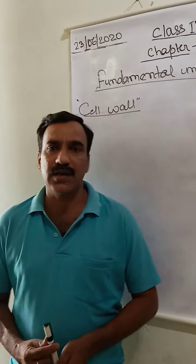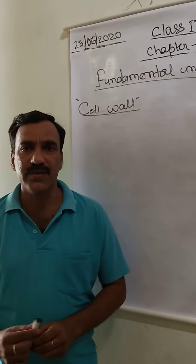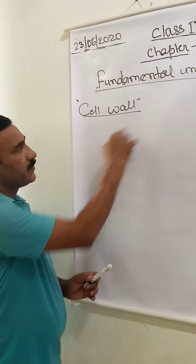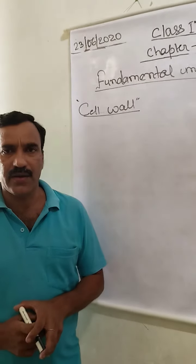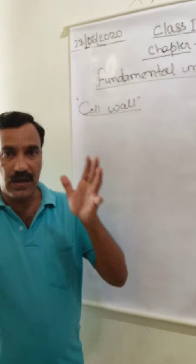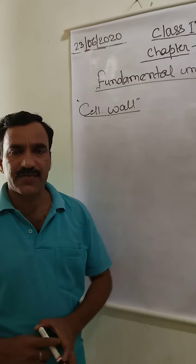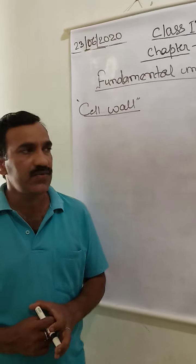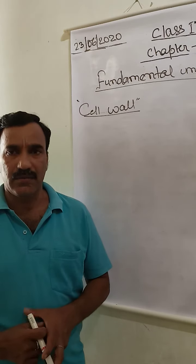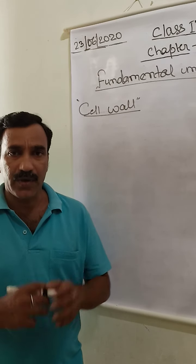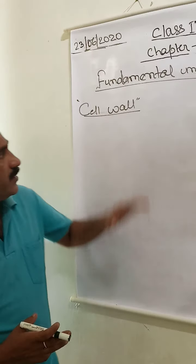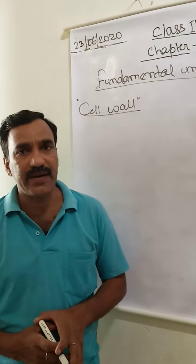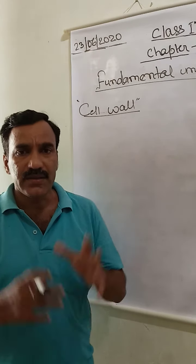Today's topic is the cell wall. As the name indicates, 'wall' makes a clear-cut image in your mind — a layer, a boundary outside which protects from the surroundings. For example, the walls in our buildings protect us from wild animals, infections, insects, and climatic conditions. In the same way, the cell wall is the wall present around a cell, and its function is to protect the cell from surrounding circumstances.